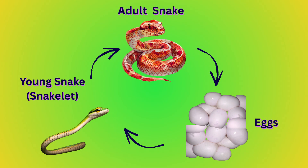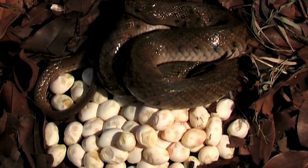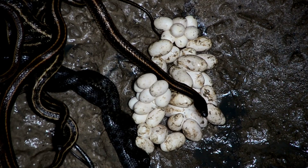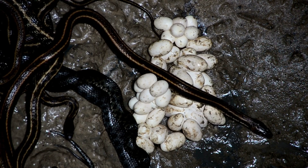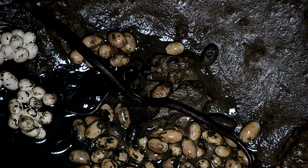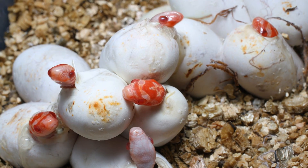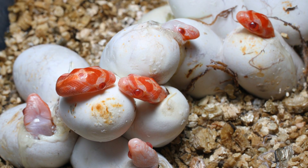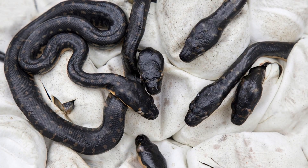The egg. Most snakes lay eggs, though some give birth to live young. Snake eggs have a leathery shell, distinguishing them from bird eggs. Snake eggs typically take 45 to 70 days to hatch, depending on species and environmental temperature. Warmer, stable conditions can speed up development, while cooler temperatures slow it down.